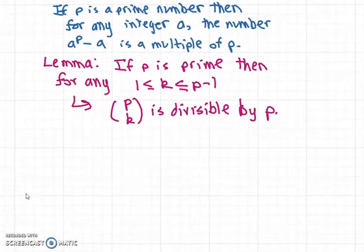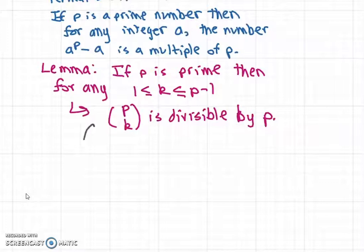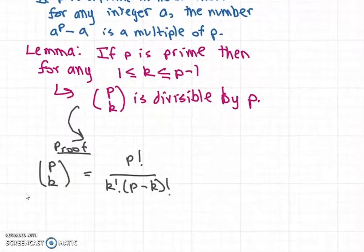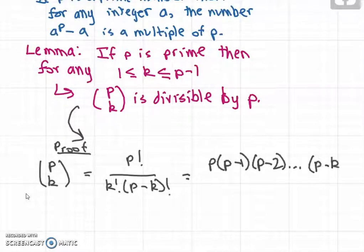To prove this lemma, we can write p choose k as p factorial divided by k factorial times (p minus k) factorial. This can also be written as p times (p-1) times (p-2) dot dot dot (p-k+1) divided by k factorial.